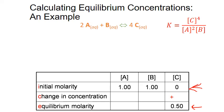If we had other products, we'd put a plus in their boxes too, because if one product increases in concentration, all other products will increase as well. By the same token, if the products increase, the reactant concentrations must decrease. So we'll put minus symbols in both of the reactant boxes.